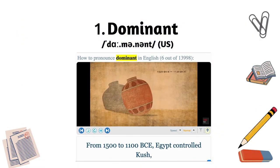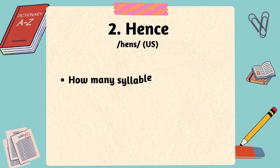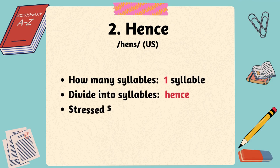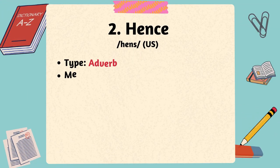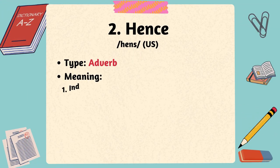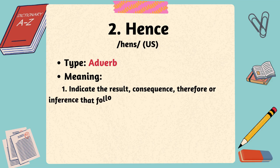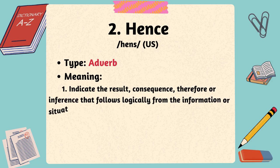The second word is hence. The word hence has one syllable, with the stress on the first syllable. Hence is an adverb, and it is used to indicate the result, consequence, or inference that follows logically from the information or situation mentioned.